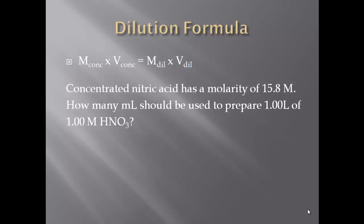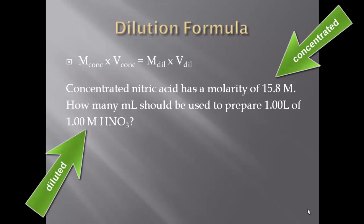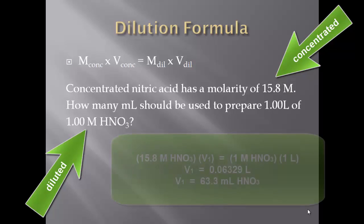Let's go ahead and try to do this problem — it should be super simple. Concentrated nitric acid has a molarity of 15.8 molar. How many milliliters should be used to prepare one liter of a one molar nitric acid solution?